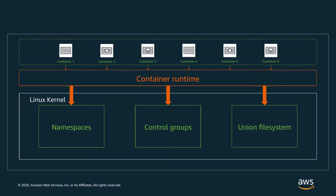There are three primitives that make up the core of what we think of as a container: control groups, namespaces, and file systems. These primitives are used with regular Linux processes, and using them together in particular ways makes what we think of as a container. For each technology we'll start with an explanation and then do a demo showing it in action — you should be able to repeat the steps on your own.